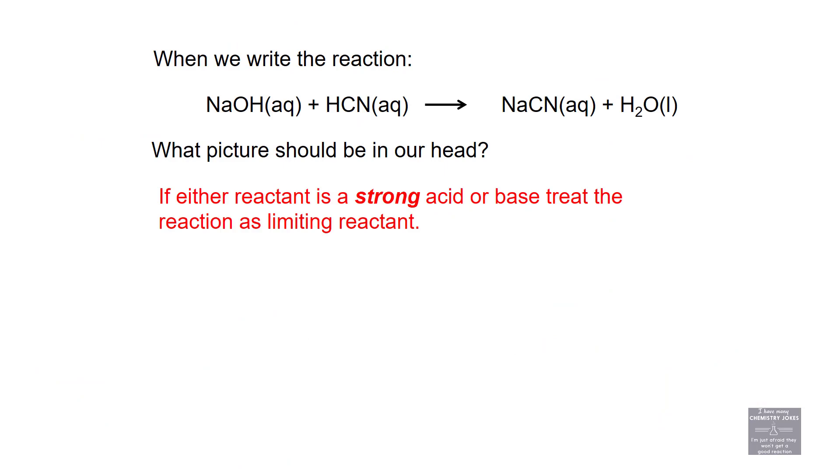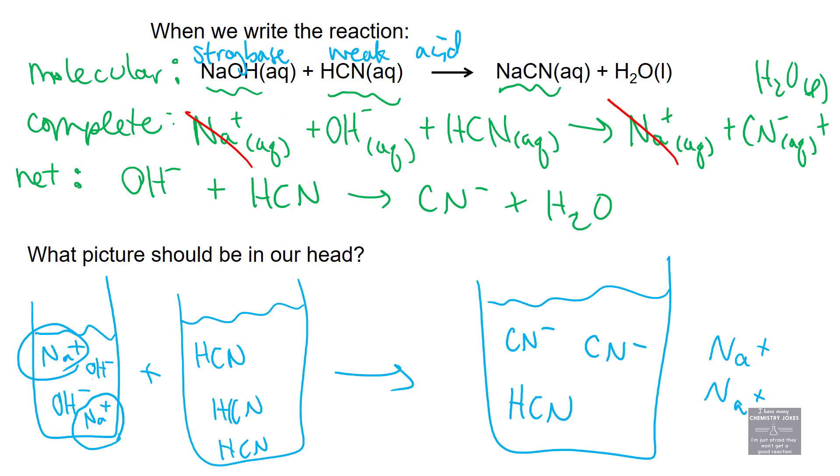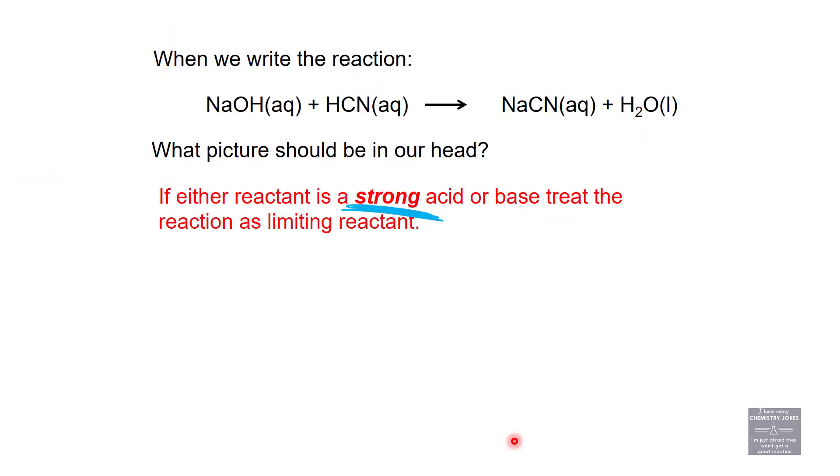If either reactant is strong, treat it as limiting reactant. The reaction will proceed until one component runs out because this reactant is strong. This was our limiting reactant in this example, so it ran out first. We'll see what to do with that momentarily.